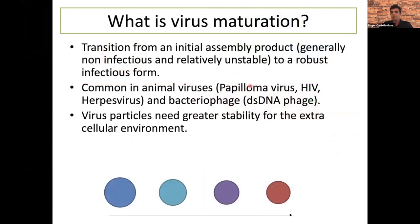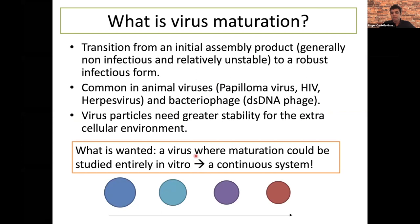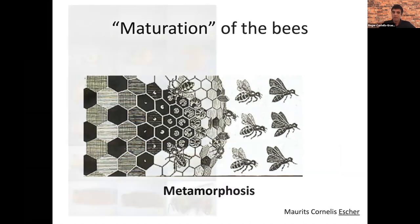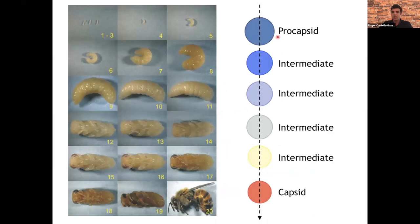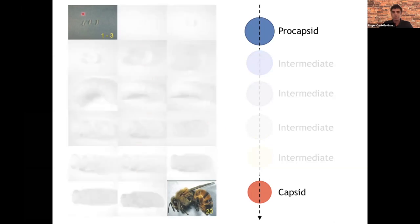We are using cryo-EM to study maturation. Virus maturation is a transition from an initial assembly particle to a final one. Many viruses, common in animal viruses and bacteriophages, have an initial stage and then a final one. Sometimes it's very difficult to isolate different steps. For a long time, what was wanted was a system where you could study the whole maturation process in vitro — like studying the metamorphosis of a bee, where you can see the full life cycle from egg through intermediates to the final form.